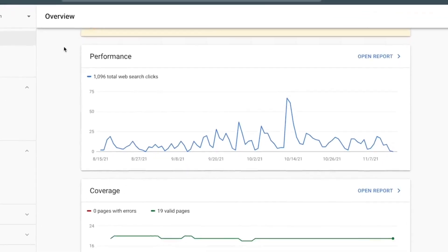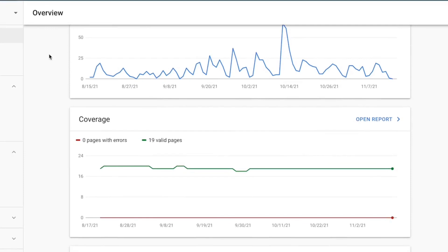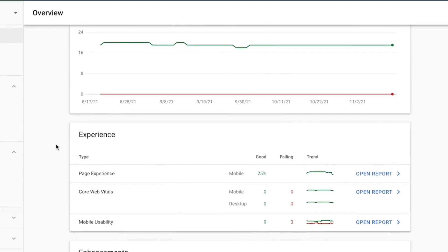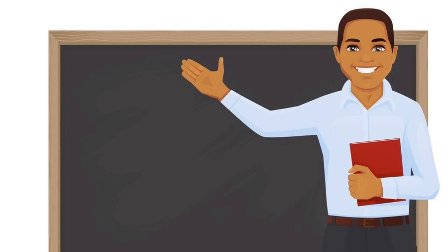The overview page shows a summary of your site's health, including any security issues, graphs of metrics, and summaries of enhancements for the site, such as structured data. You should check on this page periodically to ensure that there are no security issues or enhancement errors.